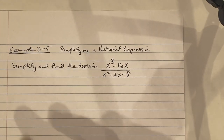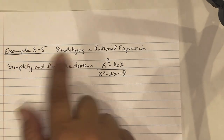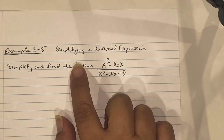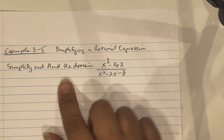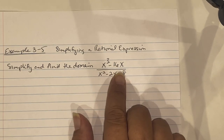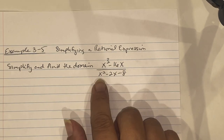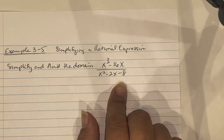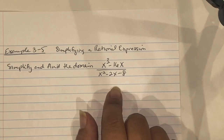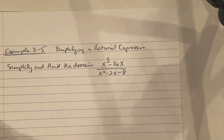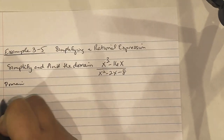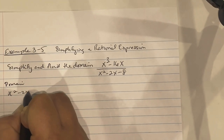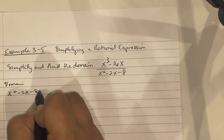Examples 3 through 5 ask us to simplify rational expressions and find the domain. The problem is x cubed minus 16x divided by x squared minus 2x minus 8. We tackle the domain first by taking the denominator, x squared minus 2x minus 8, setting it equal to 0, and factoring it.